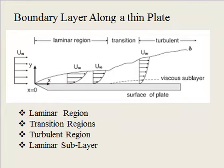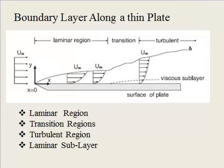As you move perpendicular to the surface, the velocity of the fluid increases from zero at the surface, and at a particular distance from the surface its value becomes 99 percent of the free stream velocity. This region up to which the velocity is continuously varying is called the boundary layer. Outside the boundary layer, the velocity of the fluid is always constant and equals the free stream velocity u-infinity. This region of continuous velocity variation in the perpendicular direction is called the boundary layer.